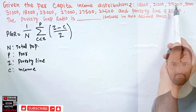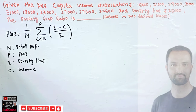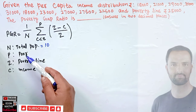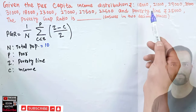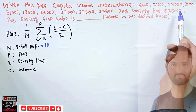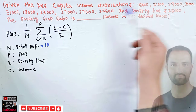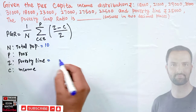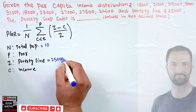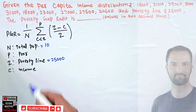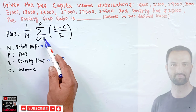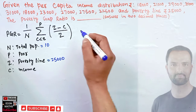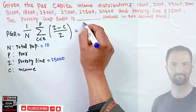The total population n is found by counting: one, two, three... up to ten individuals, so n equals ten. p denotes the number of poor — those persons whose income is less than the poverty line. Our poverty line is 25,000, and c denotes income, so the condition is c less than z. We consider only the incomes of poor individuals.